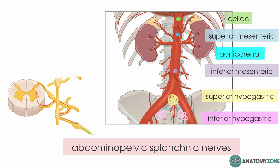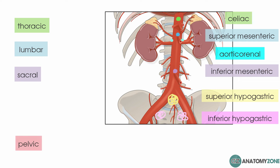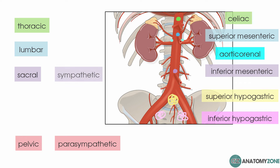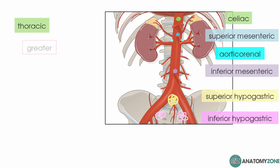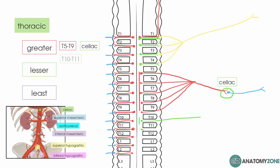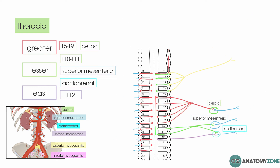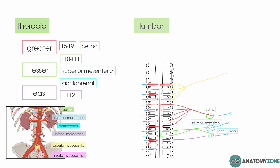In terms of the abdominopelvic splanchnic nerves, you've got the thoracic splanchnics, the lumbar splanchnics, and the sacral splanchnics. Pelvic splanchnics are part of the parasympathetic nervous system — an easy way to remember that is: sacral equals sympathetic, pelvic equals parasympathetic. The thoracic splanchnics are divided into the greater, the lesser, and the least. The greater thoracic splanchnic nerve arises from T5 to T9 and synapses in the celiac ganglia. The lesser thoracic splanchnic arises from T10 to T11 and synapses in the superior mesenteric and the aorticorenal ganglia. The least splanchnic nerve arises from T12 and synapses in the aorticorenal ganglia. The lumbar splanchnics project to the inferior mesenteric ganglion, and the sacral splanchnics project to the inferior hypogastric plexus.